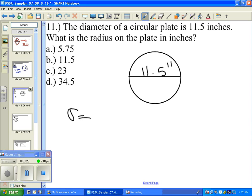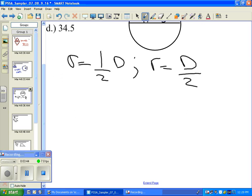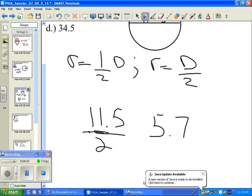The radius equals the diameter, r equals diameter divided by 2. So what we have to do is we have to take this 11 and a half inches and divide that by 2. And what we're going to end up with is 5.75 inches.